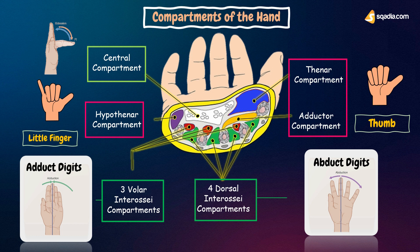In the coming sections, we will talk about the fascia and intrinsic muscles of the hand in detail, along with the arterial and nerve supply of the hand.